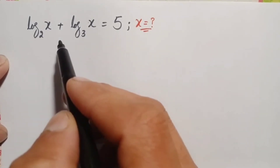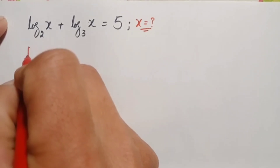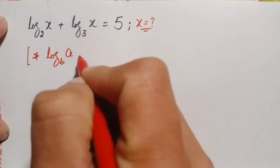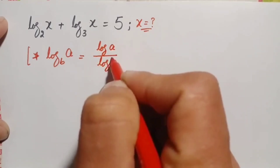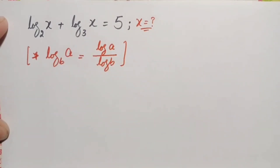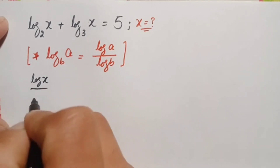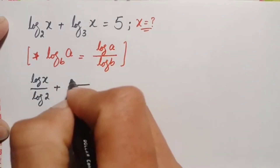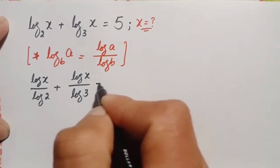On the left-hand side, in both terms, we will use a logarithm result. We can write log of a with base b as log of a divided by log of b. Using this result, the left-hand side becomes log of x divided by log of 2, plus log of x divided by log of 3, is equal to 5.